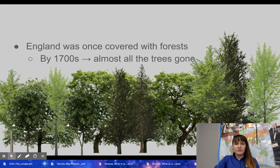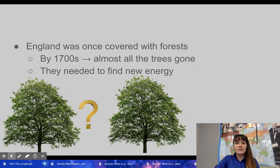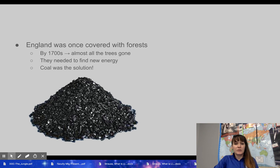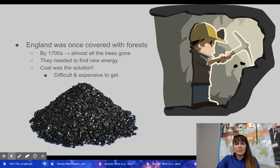Something else to keep in mind — England was once covered with forests, but the trees were used for building and energy. By the 1700s, almost all the trees were gone in England. They needed to find a new form of energy, and that energy came in coal. Coal can be burned and used with water to make steam power, which is used for machinery and transportation — whether by steamboat or railroad. But obtaining coal was difficult and expensive, since it's underground.